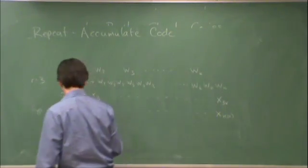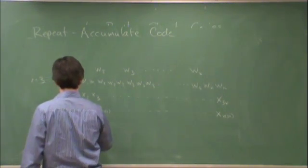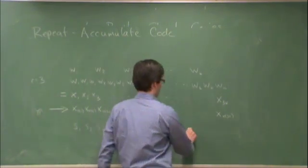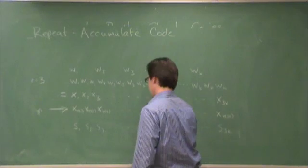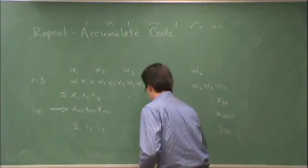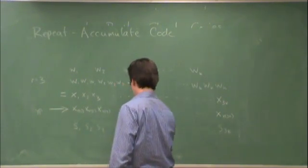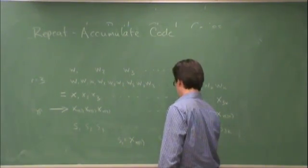And then, what I send is s1, s2, s3, and so on up to s3k. Where s1 is equal to x of pi 1, and s_i is equal to